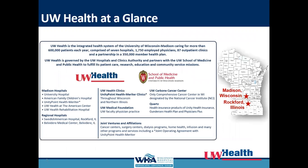A little bit about UW Health: we are a large academic health system with several hospitals, clinics, and a large patient population of 600,000 patients. We've grown a lot in the last few years, and with that growth we've also added many advisors. We have 200 patient family advisors serving on an annual basis, and they serve in 12 councils and between 80 and 100 active committees or projects annually, mostly in the Madison area.